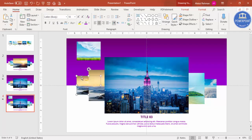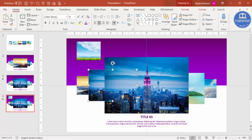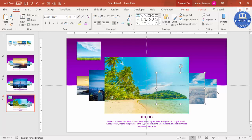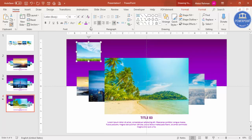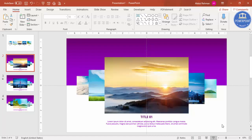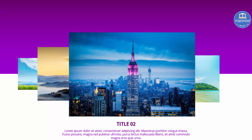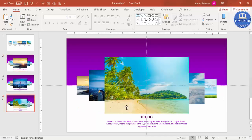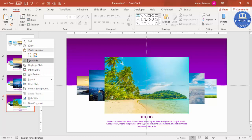Use Format Painter to shift the images for the next slide. This image moves to the next position, this one comes to the middle, this one goes here, and this one goes there. Delete the extra duplicate. So we have Title 2 and Title 3 — very simple!